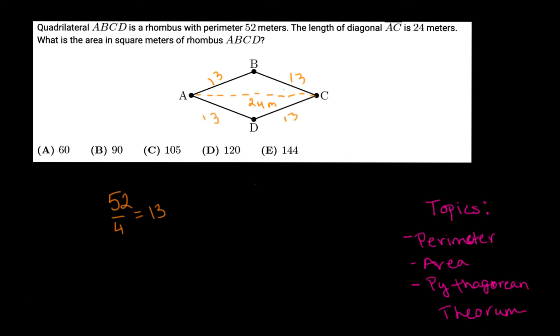Each of these is 13. What I did to solve this problem is I broke it into four right triangles by splitting it down here. The line BD, diagonal BD of unknown length, bisects AC perfectly. That means either side of the diagonal BD is 12 meters.